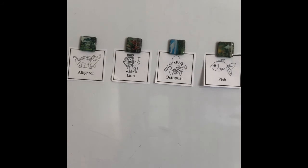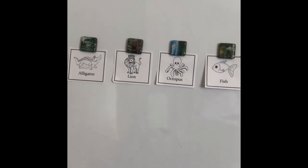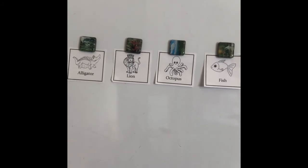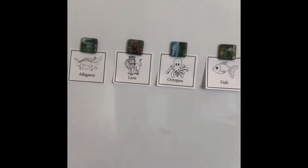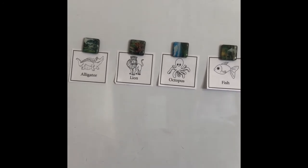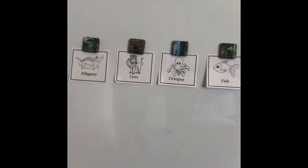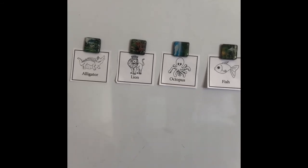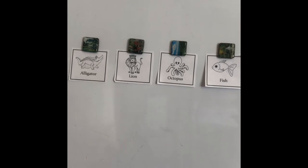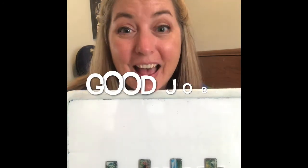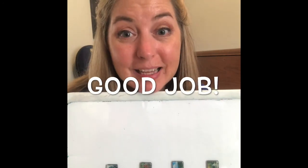Ready, everybody? Here we go. Alligator. Lion. Octopus. Fish. Alligator. Lion. Octopus. Fish. Did you do it? Great job. Thank you for doing the rhythms with me. Have a great time with your lesson.